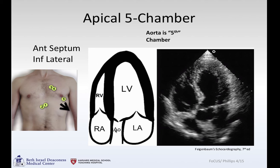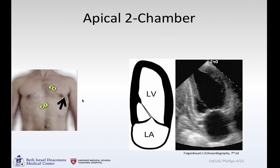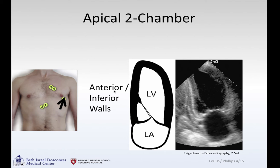Now that the aorta is in view, this is the anterior septum and inferior lateral wall. Once you've rotated out towards the bed and come rotating back across where you were with the apical four, you can get the apical two-chamber view: the inferior wall, anterior wall, and a view of the left atrium and left ventricle.